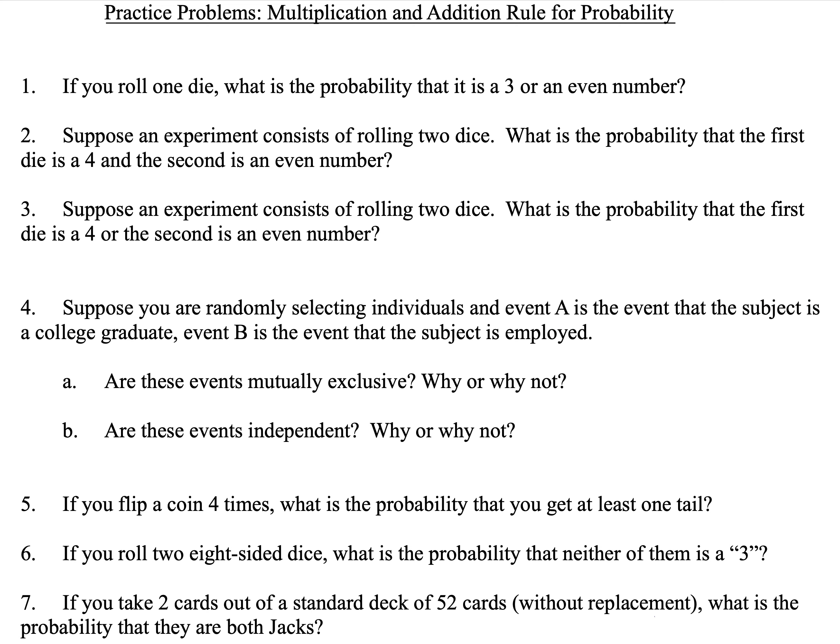Number one: if you roll one die, what is the probability that it is a three or an even number? Two: suppose an experiment consists of rolling two dice — what is the probability that the first die is a four and the second is an even number? Three: suppose an experiment consists of rolling two dice — what is the probability that the first die is a four or the second die is an even number? For those first three problems, assume it's a six-sided die.